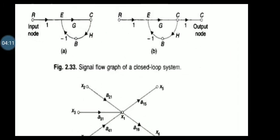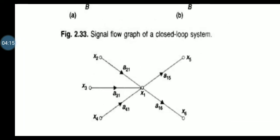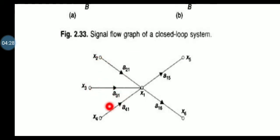Sum of all incoming signals. How many incoming signals are there? X2, X3, X4 to this node variable X1. So node variable X1 is expressed as A21·X2 plus A31·X3 plus A41·X4, which is equal to the sum of all incoming signals to this node variable.